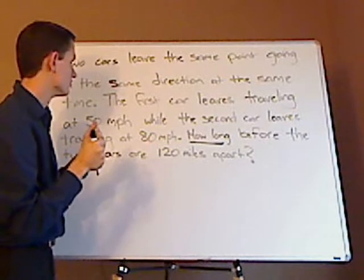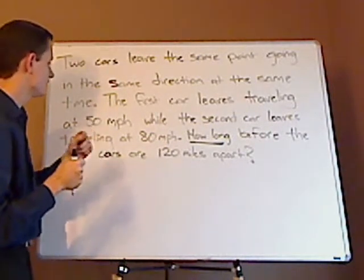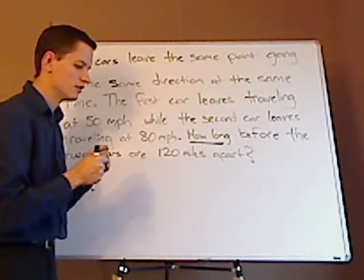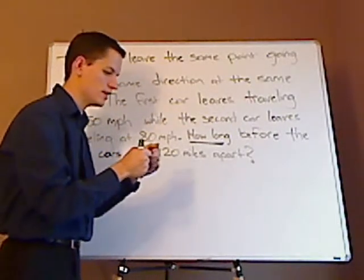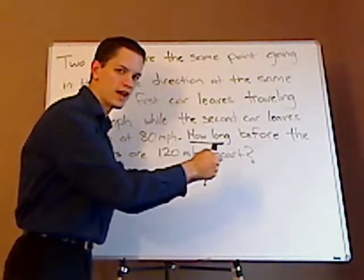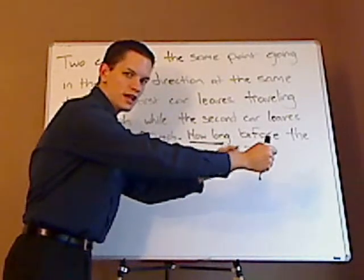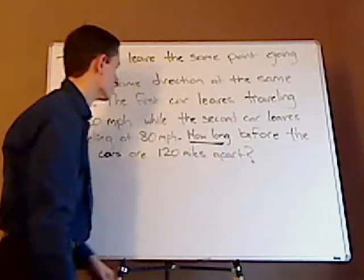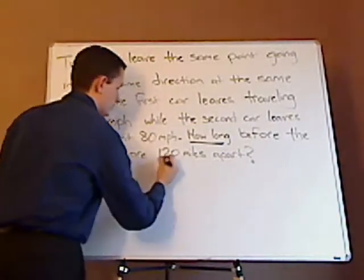The first car leaves and travels at 50 miles per hour while the second car is 80 miles per hour. So one car is going slower, the other car is going faster. And over time there's going to be a gap between the two and that gap is this.